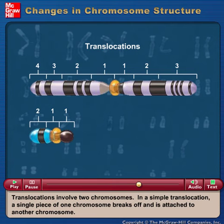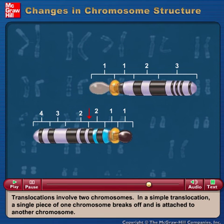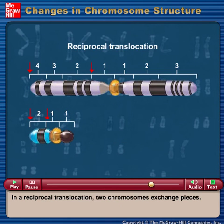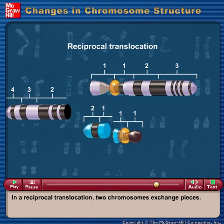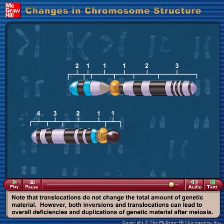Translocations involve two chromosomes. In a simple translocation, a single piece of one chromosome breaks off and is attached to another chromosome. In a reciprocal translocation, two chromosomes exchange pieces. Note that translocations do not change the total amount of genetic material. However, both inversions and translocations can lead to overall deficiencies and duplications of genetic material after meiosis.